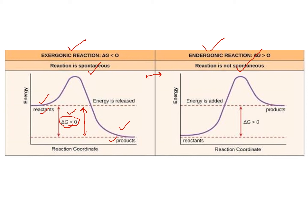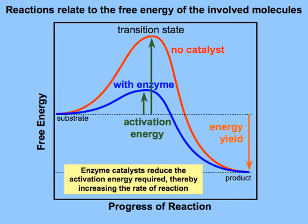If delta G is greater than zero, those reactions are non-spontaneous or endergonic reactions. In exergonic reactions, the reactants have higher energy than the products, so energy is released during the reaction. In endergonic reactions, the reactants have lower energy than the products, so they consume extra energy. This is the basic difference between exergonic and endergonic reactions.